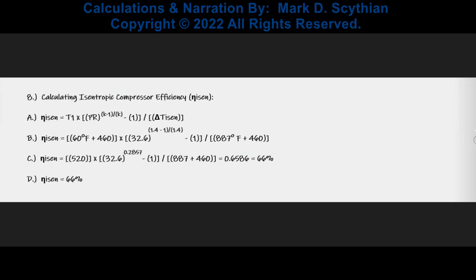Next, we compute the isentropic or adiabatic compressor efficiency. Upon doing so, the calculated proofs yield 66% isentropic compressor efficiency.